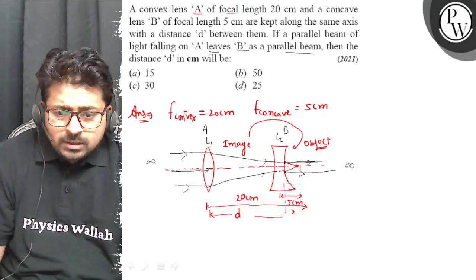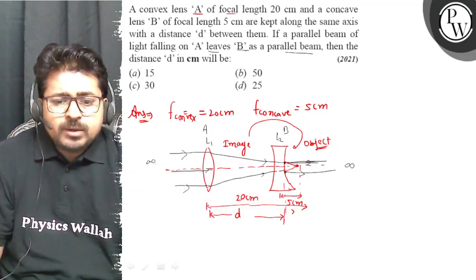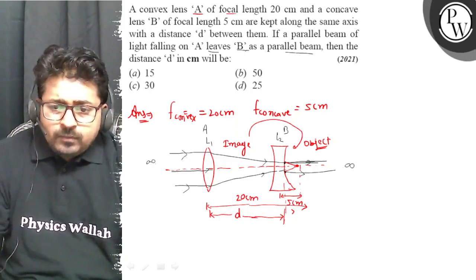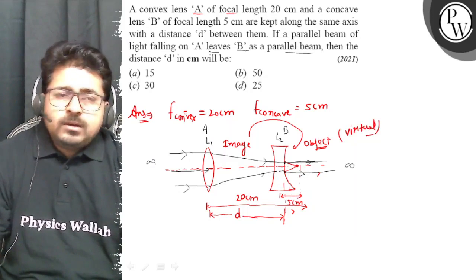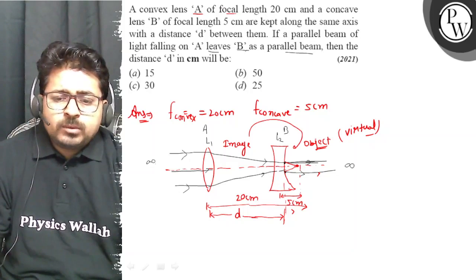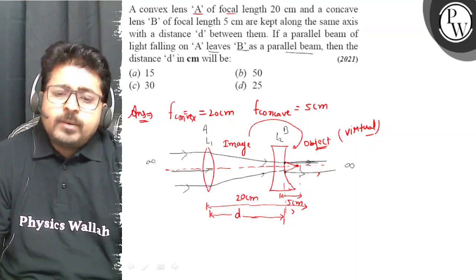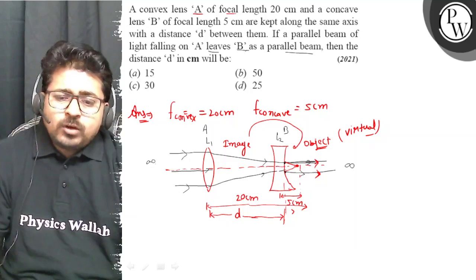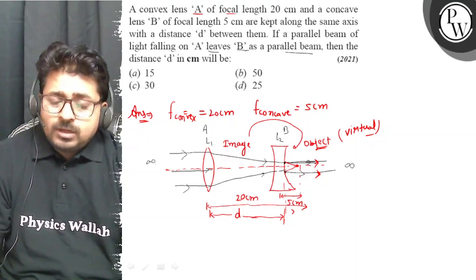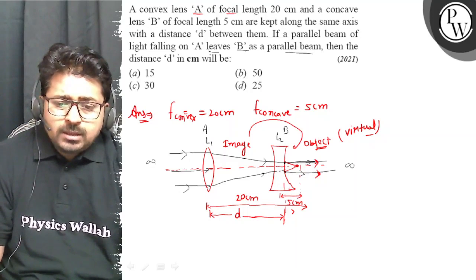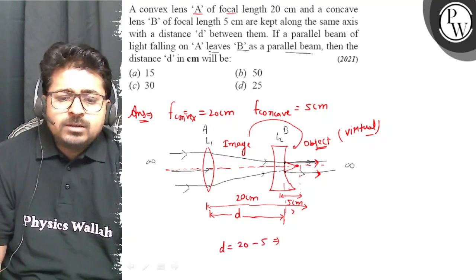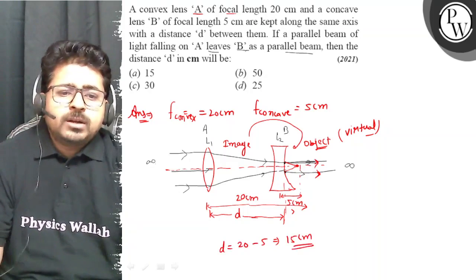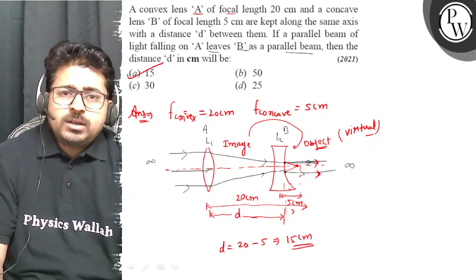The image formed by the convex lens is at 20 cm from A. For the concave lens to produce a parallel beam, this image must act as a virtual object at its focus, 5 cm from B. Therefore, the distance D = 20 cm − 5 cm = 15 cm. So the answer is 15 cm.